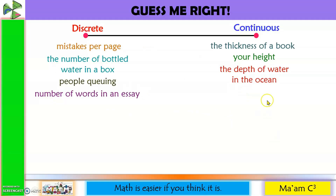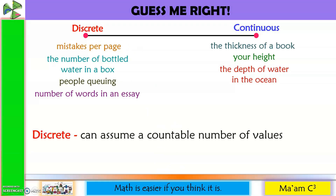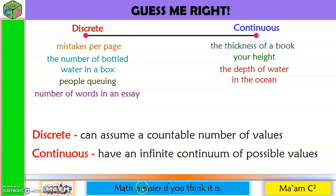From these examples, how can you define discrete and continuous? Discrete can assume a countable number of values — those values that you can count. While continuous has an infinite continuum of possible values. Imagine a ruler: from 0 to 1, there are many possible values in between.